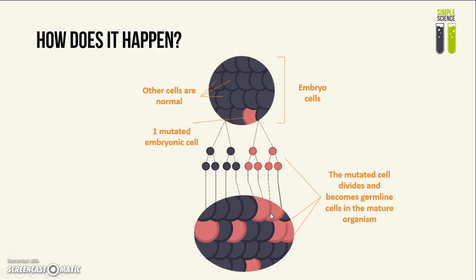So you end up with germline cells that are mutated in the mature organism, while somatic cells are genetically normal, because they had not mutated from the beginning and did not mutate throughout the whole process. So when this happens, a parent may be phenotypically normal, but they are actually carrying germline cells that are mutated and pass on the disease to their children, even though they present with no disease if you carry out a somatic cell genetic analysis.